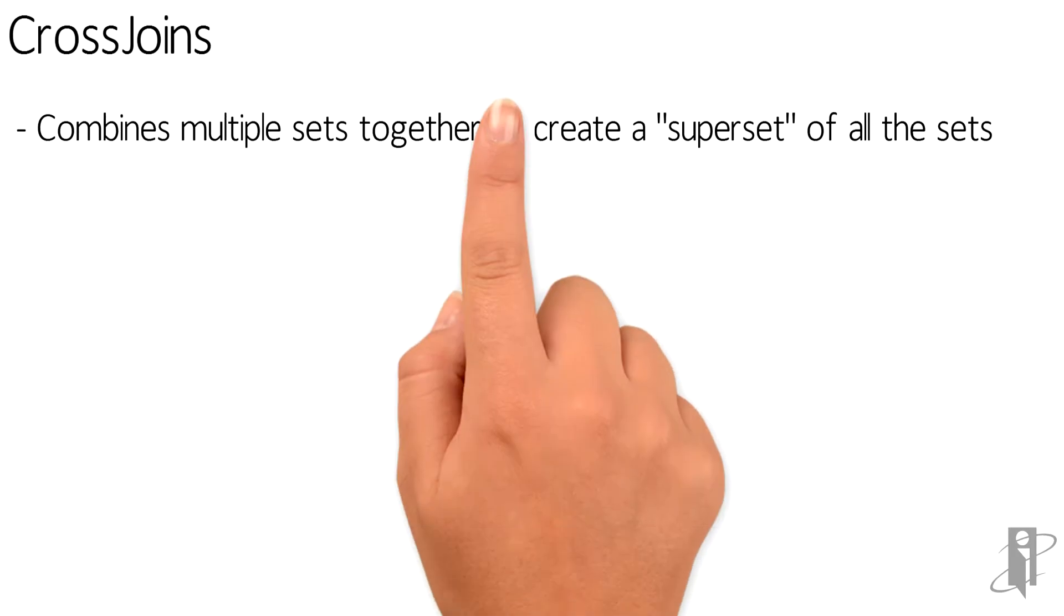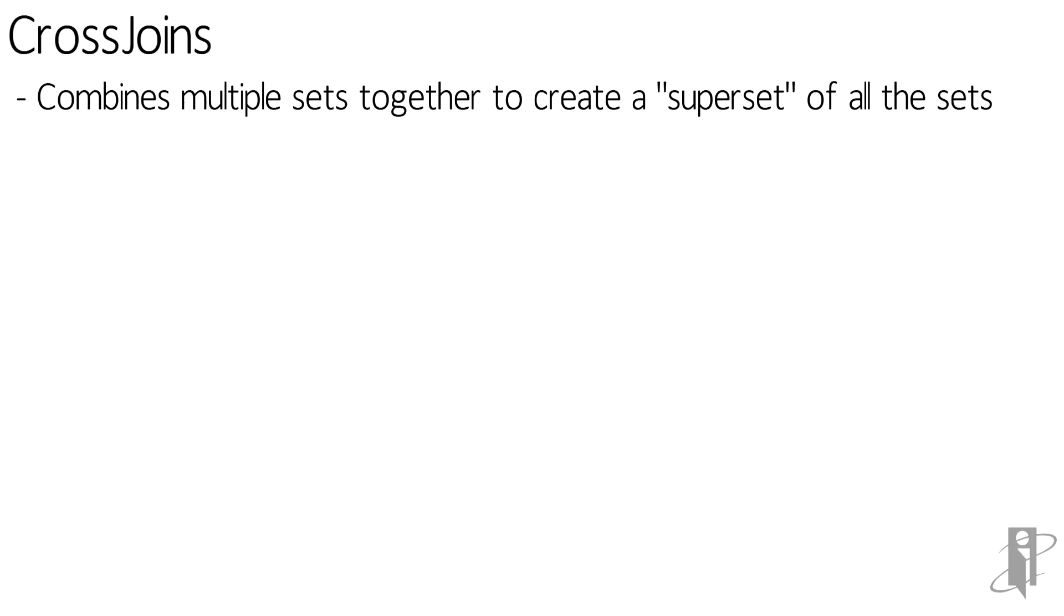Cross-joins combine multiple sets together to create a superset of all the sets. The syntax is enclosed in parentheses.